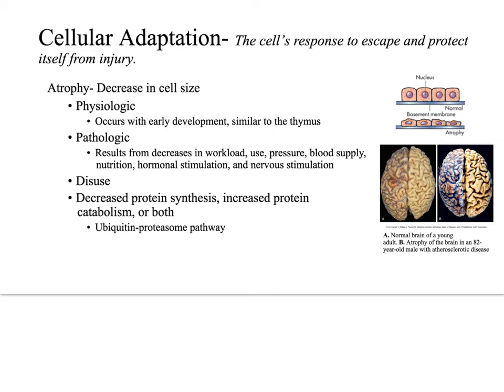Examples of atrophy include disuse — for instance, an arm in a cast for a long period of time, where the muscles not being worked start to atrophy and become smaller. Another example is bed ulcers or bed sores that come from pressure. There can also be a lack of circulating hormones or endocrine factors, which could look like atrophied breast tissue after lactation or atrophy of the uterus after menopause. Denervation can also occur, which is damage to axons that supply the muscles, causing lack of stimulation and disuse, also resulting in atrophy.